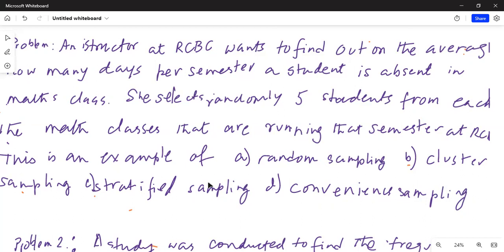A, random sampling, B, cluster sampling, C, stratified sampling, D, convenience sampling. Random sampling means randomly selecting some students from the entire population.